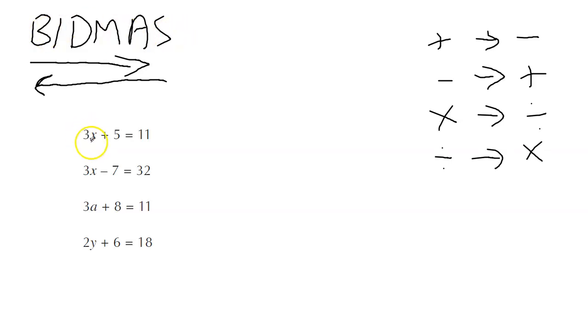So here we have 3x plus 5 is 11. The first thing I'm going to get rid of is any adding and subtracting, which is this add 5. So we do the opposite. The opposite of adding 5 is to take 5. We've still got the 3x, we've still got the equals, we've still got the 11. But the 5 has moved over and gone from an add to a take away. We've done the opposite. And of course, we can work that out. It's 3x equals 6.